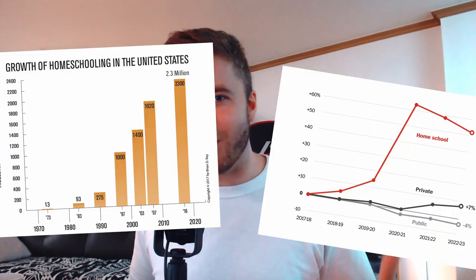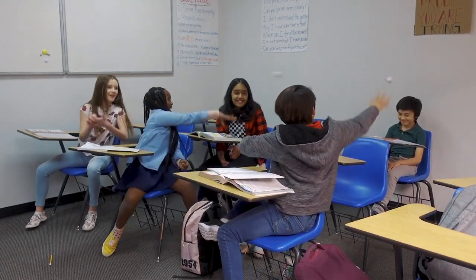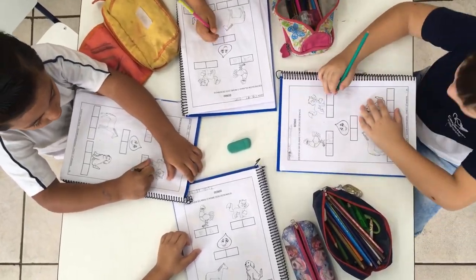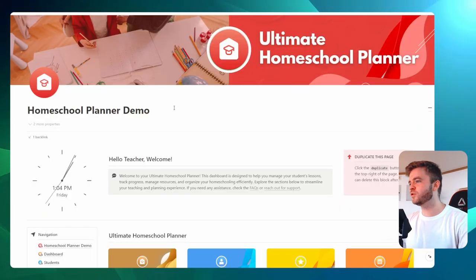In recent years, homeschooling has become increasingly popular as parents look for more control over their children's education. Concerns about traditional schooling combined with the desire for flexibility and a personalized learning experience have led many families to choose homeschooling as a better alternative. This is why in today's video I'm going to show you how you can use the Ultimate Homeschool Planner, a powerful tool inside Notion, to simplify these tasks and keep your homeschooling journey on track.